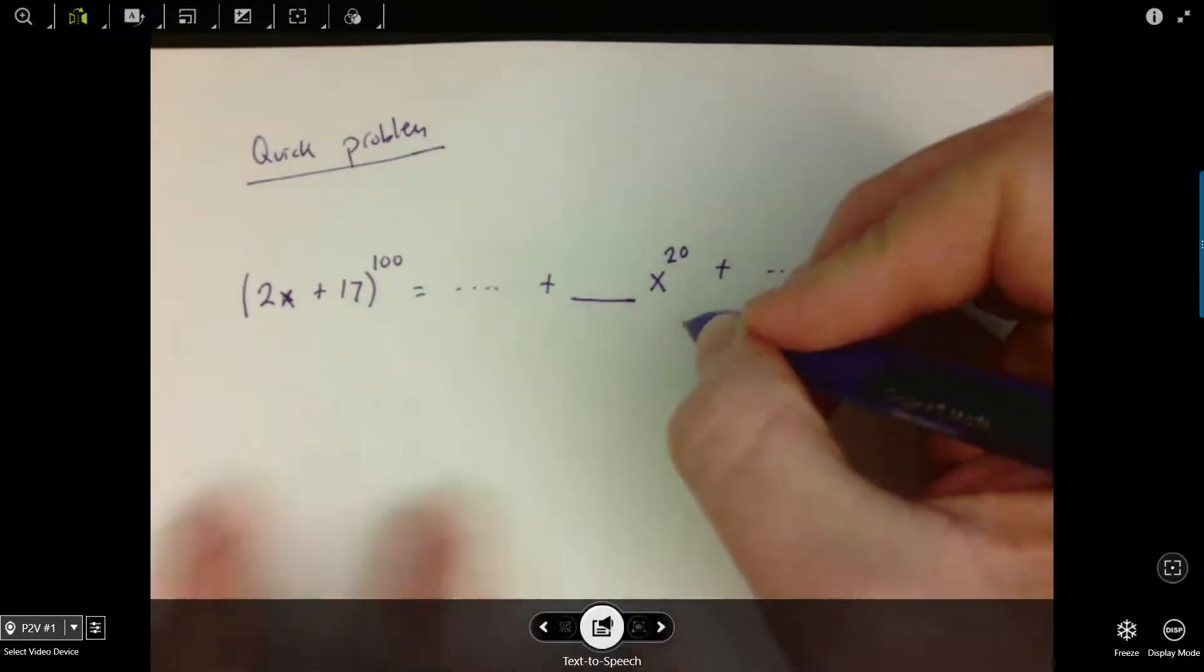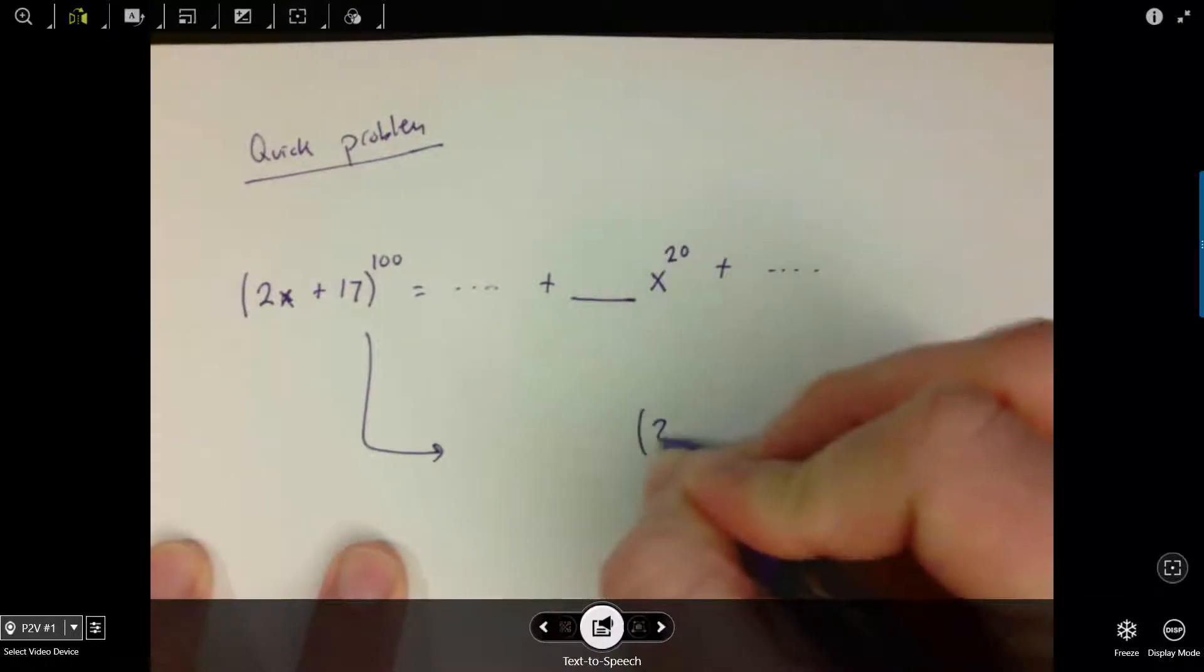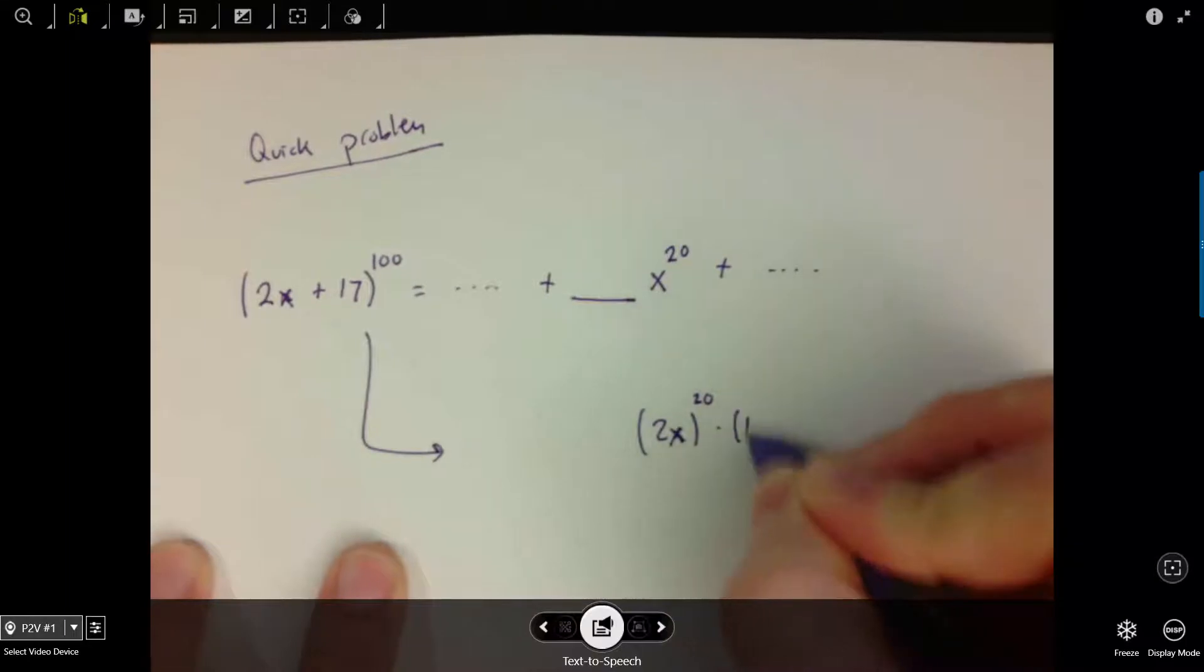So if I want to rewrite this, let's write this down here. So I'm saying I've got my 2x term raised to the 20th power, and then I've got my 17 raised to the 80th power.